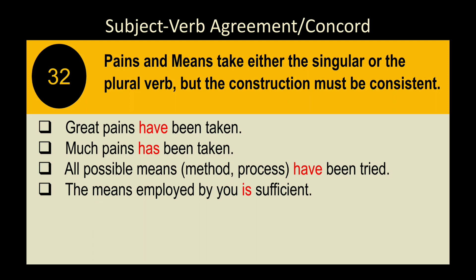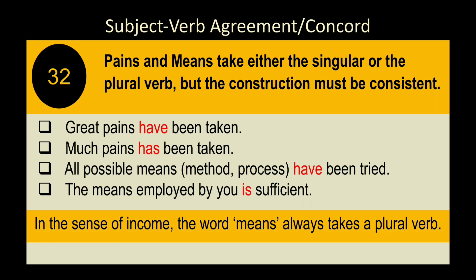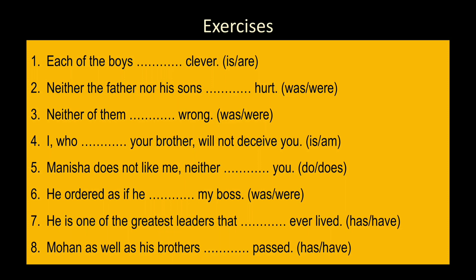Rule 34: 'Pains' and 'means' take either singular or plural verb, but the construction must be consistent. 'Great pains have been taken.' 'Much pains has been taken.' 'All possible means have been tried' — plural sense. 'The means employed by you is sufficient' — singular sense (a particular method). In the sense of income, 'means' always takes a plural verb: 'My means were ample.'